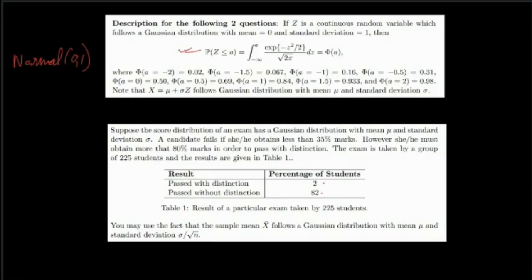One common mistake people make is not recognizing these are percentages. Many think this is the number of students, which is not the case. Don't make this mistake. Looking here, you'll understand there are 2% students who passed with distinction, so basically 84% students passed and 16% failed. Not 2 students who passed with distinction, 82 students without distinction, and 141 who failed. That is not right.